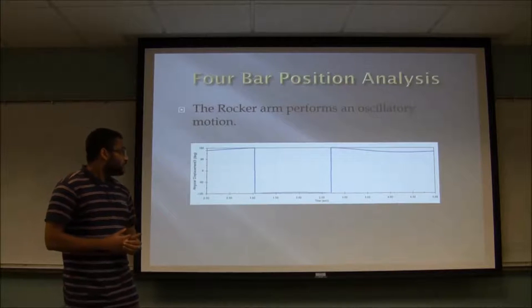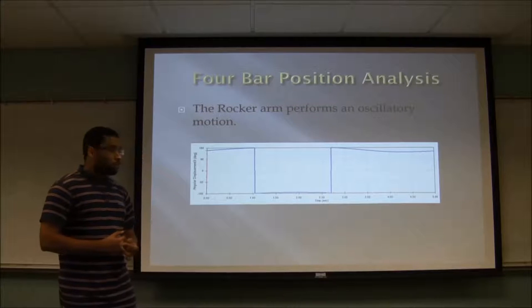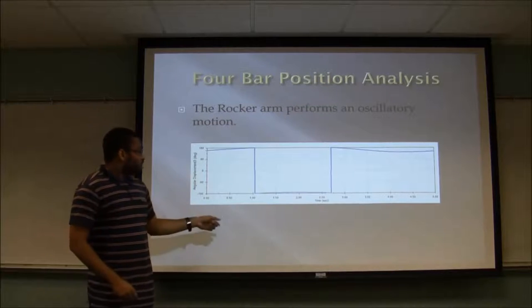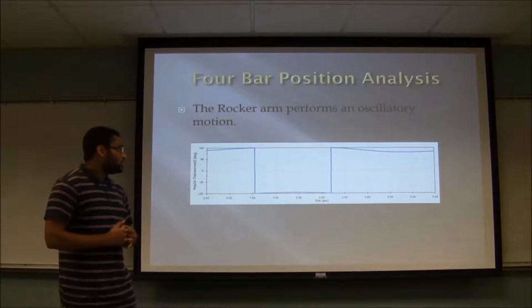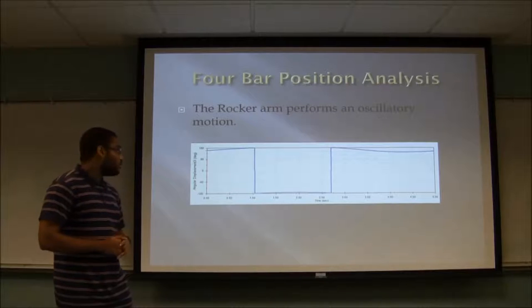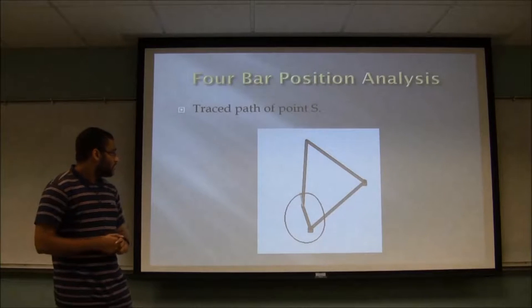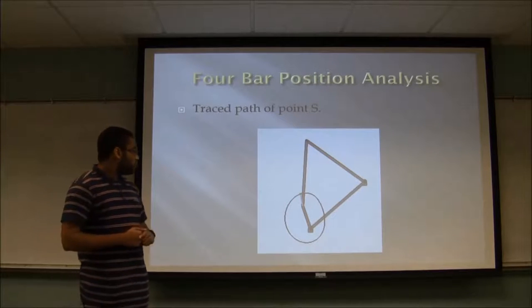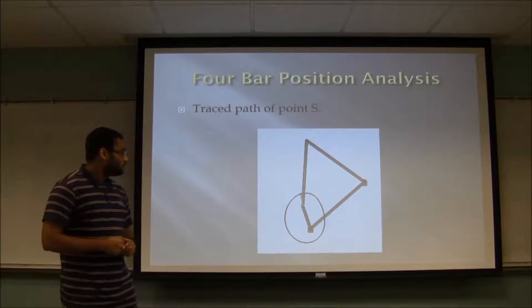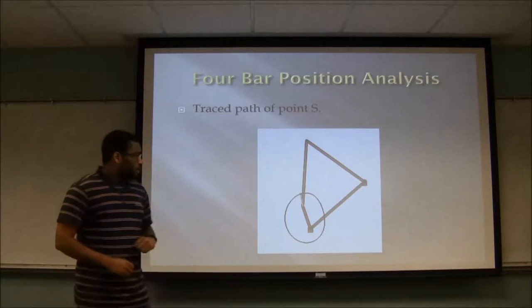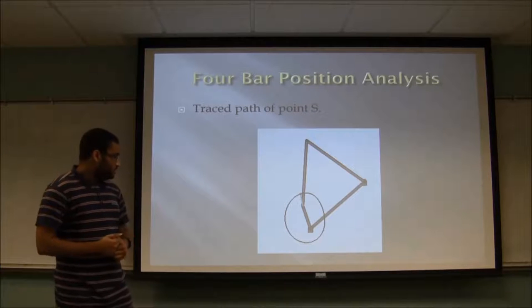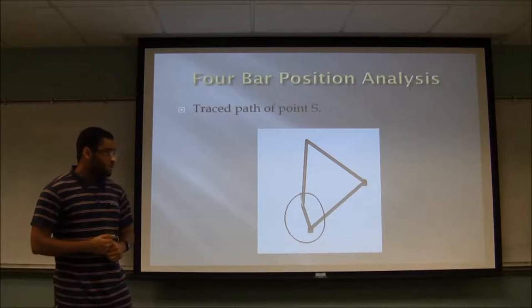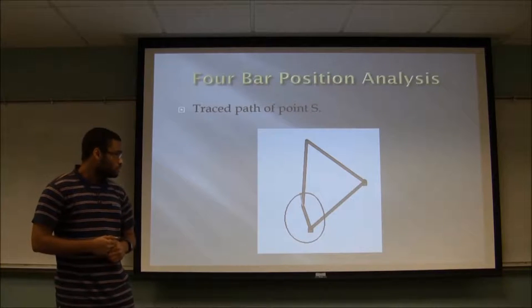This one exemplifies the rocker arm, R4. You can see these vertical lines are where it changed directions in going back and forth. This is an image of the trace path at point S. As you can see, the most distinctive feature about it is that it is more oval in shape.